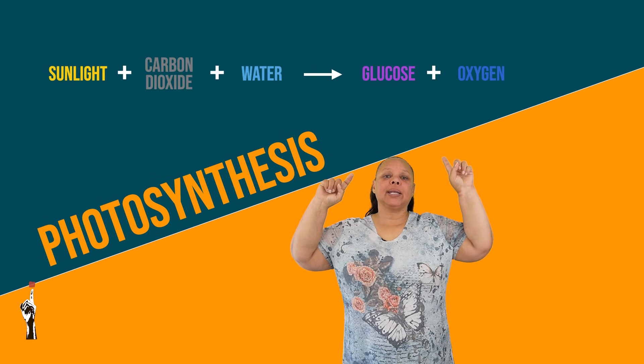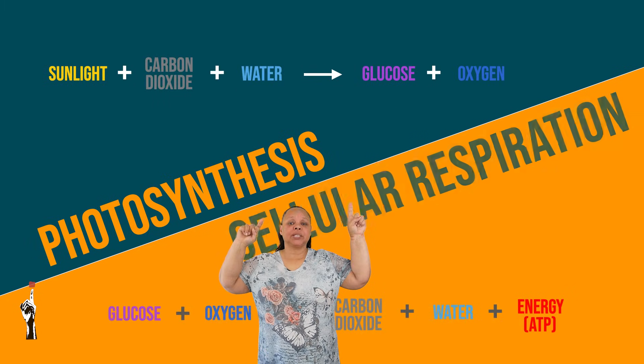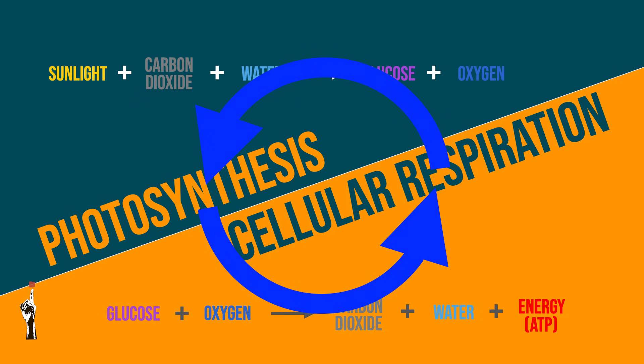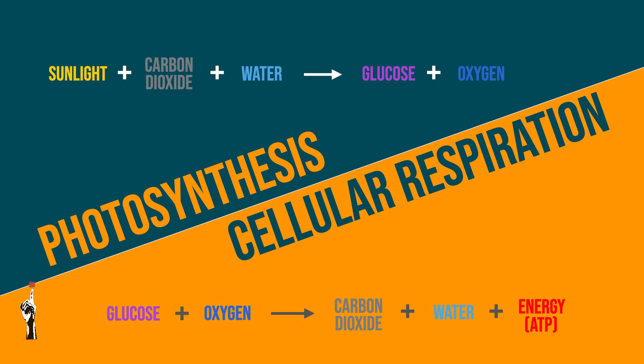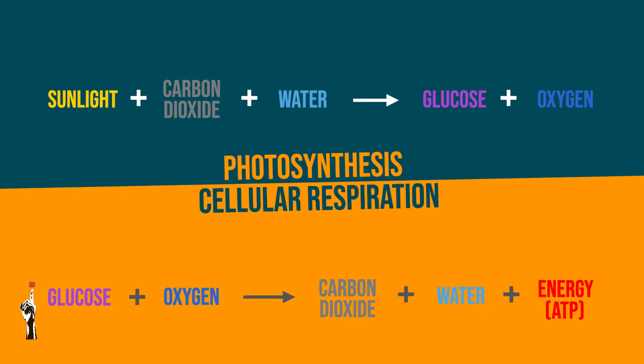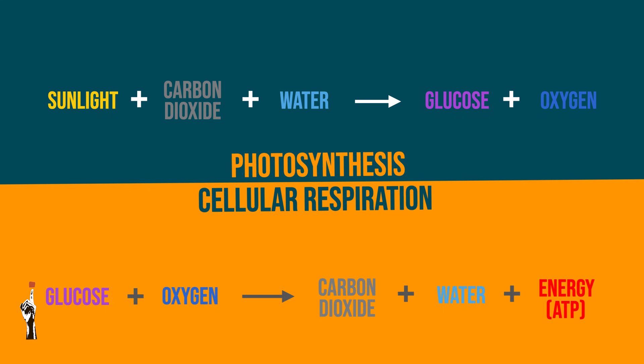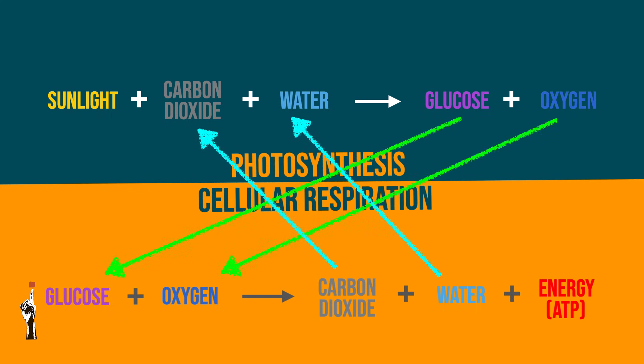At a glance, it may look like the two reactions — photosynthesis and cellular respiration — are reverse reactions. But in actual fact, they are not. They are, however, interlinked, as the products produced in the one reaction can act as reactants in the other reaction.